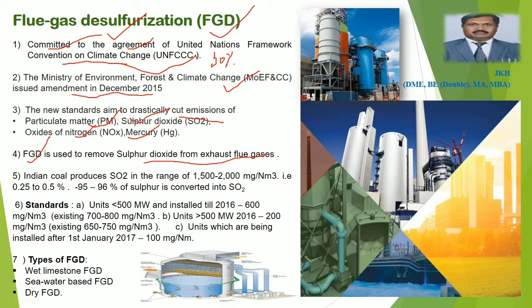Need for FGD: sulfur dioxide emission results in acid rain, corrosion of buildings and structures, and affects human health as well. The range of sulfur content in Indian coal produces sulfur dioxide in the range of 1500 to 2000 microgram per cubic meter of flue gas, that is approximately 0.25 to 0.5%. In imported coal, it is more than 0.6%. 95 to 96% of sulfur is converted into sulfur dioxide, and FGD is the technology used to remove this sulfur dioxide from the flue gases.